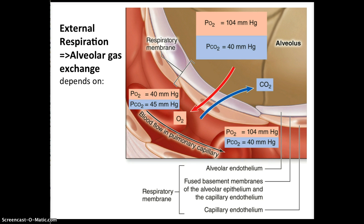External respiration is based on alveolar gas exchange. We look at the respiratory membrane, which must be crossed, formed by the alveolar endothelium, the fused basement membrane, and the capillary endothelium. Oxygen crosses from the alveolus to the capillaries, blood plasma, and red blood cells, while carbon dioxide moves from the blood into the alveolus.